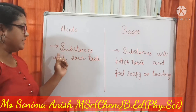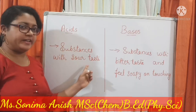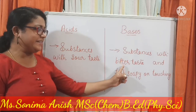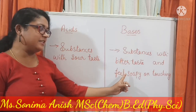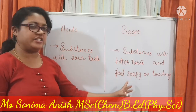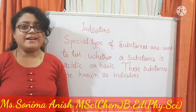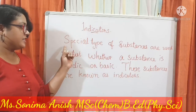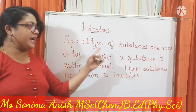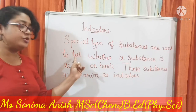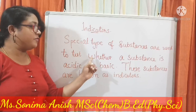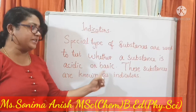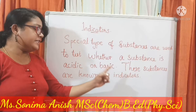Acids are substances with a sour taste. Bases are substances with a bitter taste and feel soapy on touching. Now, what are indicators? Indicators are a special type of substances used to test whether a substance is acidic or basic.